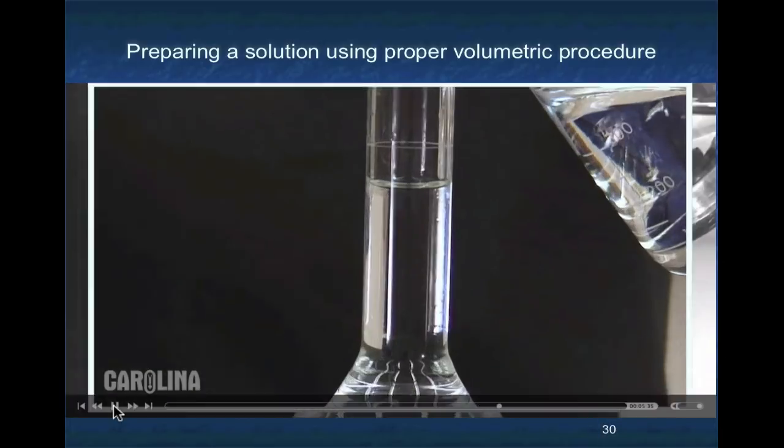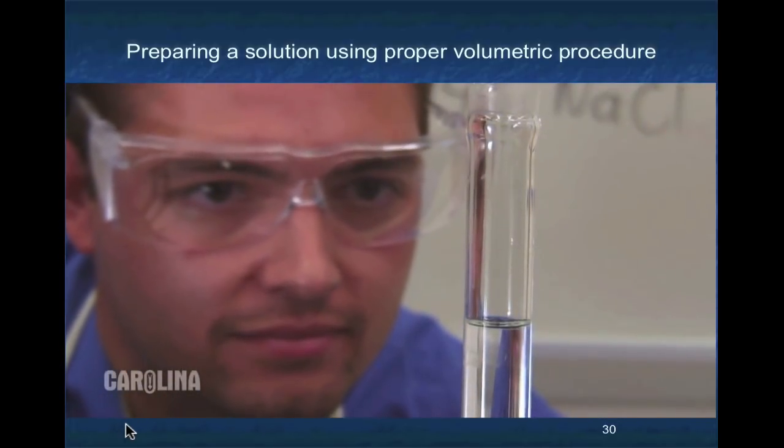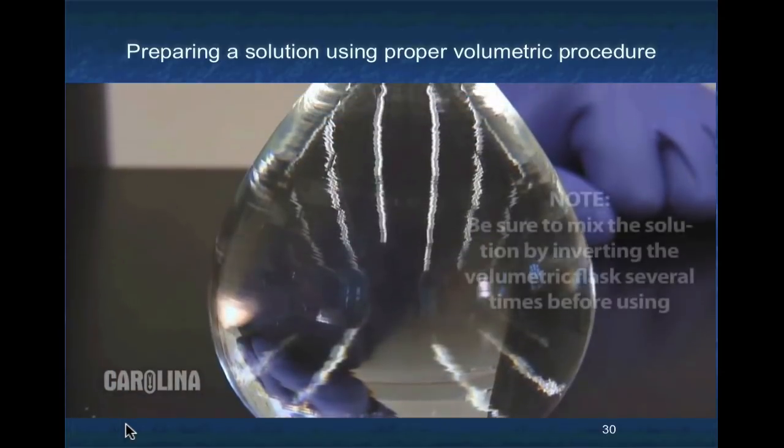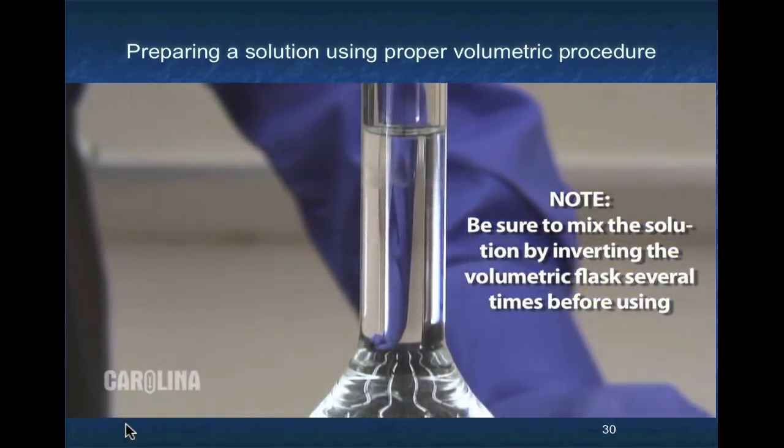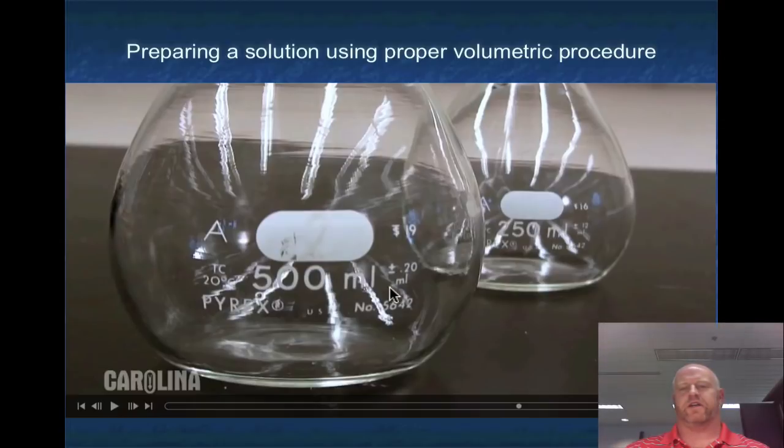This phenomenon creates what is called a meniscus. The bottom of this curved meniscus should sit directly level with the line on the flask. At this point, there is exactly 500 milliliters of solution, with an error of 0.2 milliliters. Notice here that it shows the error value, plus or minus 0.20 milliliters. Also notice how it says 20 degrees Celsius. What they're telling you is that this volumetric flask is only standardized at 20 degrees Celsius. So if you're working in a much hotter environment or a much colder environment, the expansion of the glass itself would throw off the volume and would not be accurate anymore.